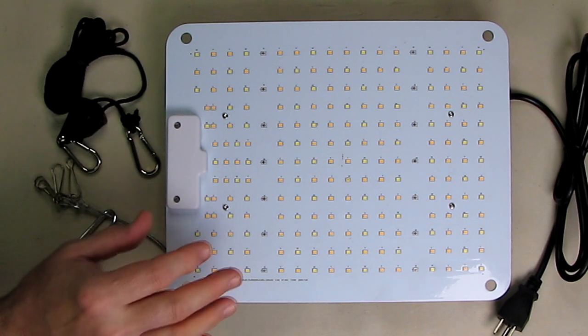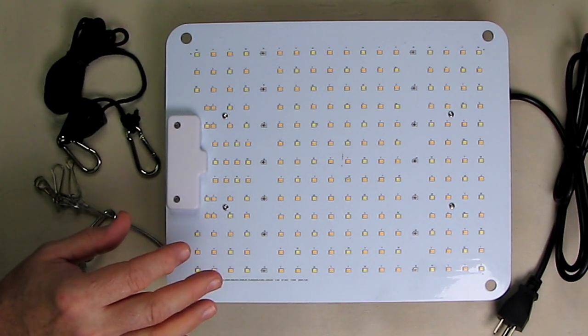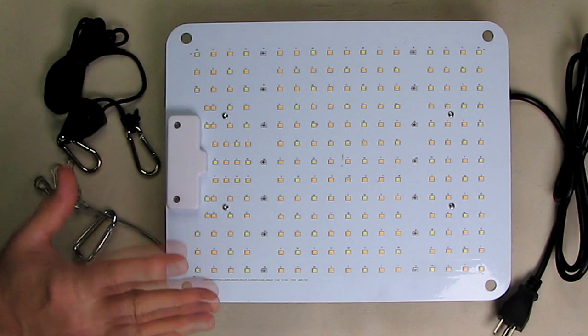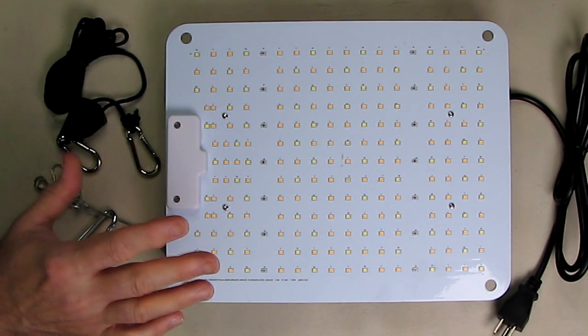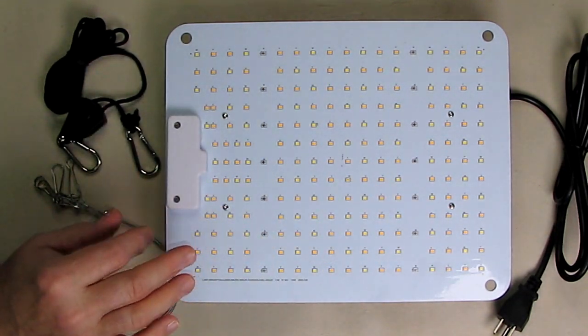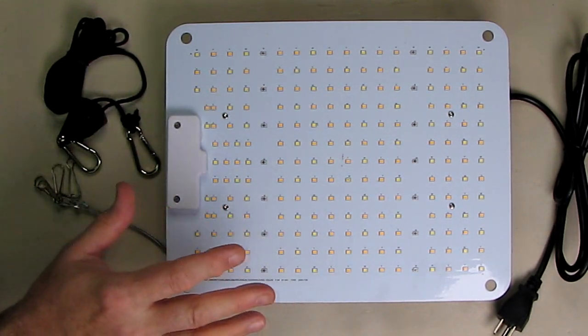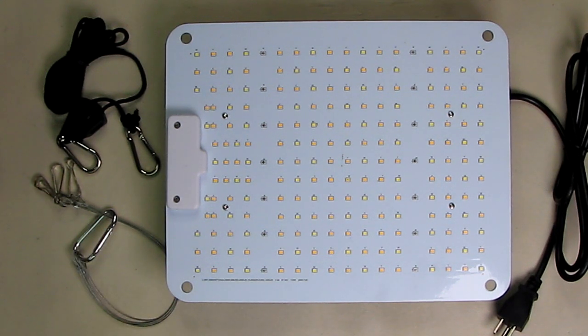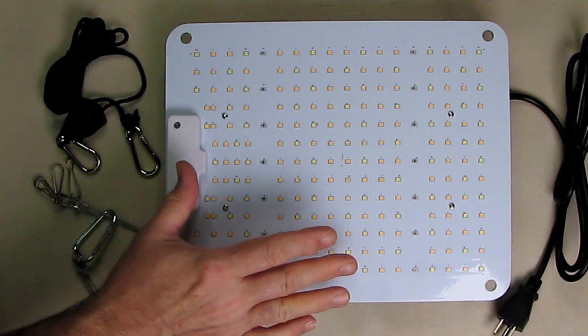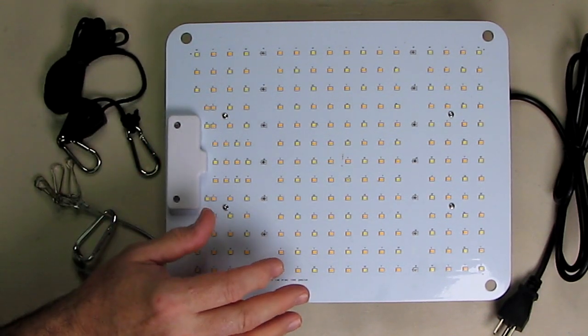This is high efficiency. We're going to measure the power of this. This consumes 110 watts and it has a true output with 222 LEDs. And this should replace the traditional 1000 watt high pressure sodium or metal halide bulbs, so it's using a fraction of the energy but producing the light output that would grow your plants.